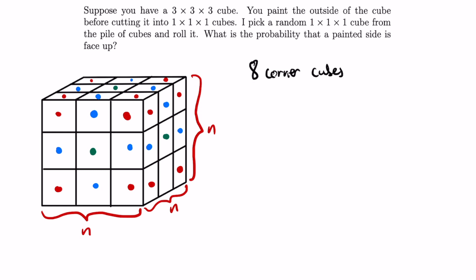Let's try to find the number of edge cubes. A cube has 12 edges, and each of the edges contains n cubes. However, since 2 of these cubes are corner cubes, the number of edge cubes per edge is n minus 2. Therefore, the number of edge cubes in total is 12 times n minus 2.